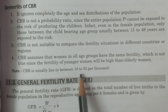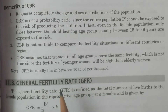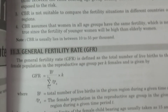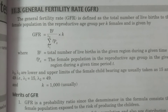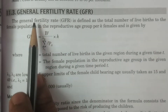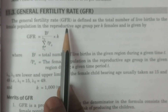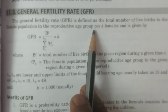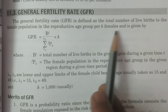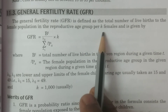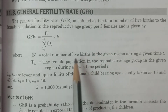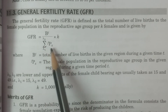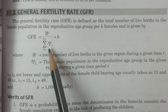Generally, CBR ranges between 10 to 55 per thousand — this is the typical figure obtained by experience. Based on the demerits of CBR, we now discuss another measure called the General Fertility Rate (GFR). GFR is defined as the total number of live births relative to the total female population in the reproductive age group (child-bearing age group), per K females. The formula is: GFR = BT / (Σ from λ1 to λ2 of FPX) × K.